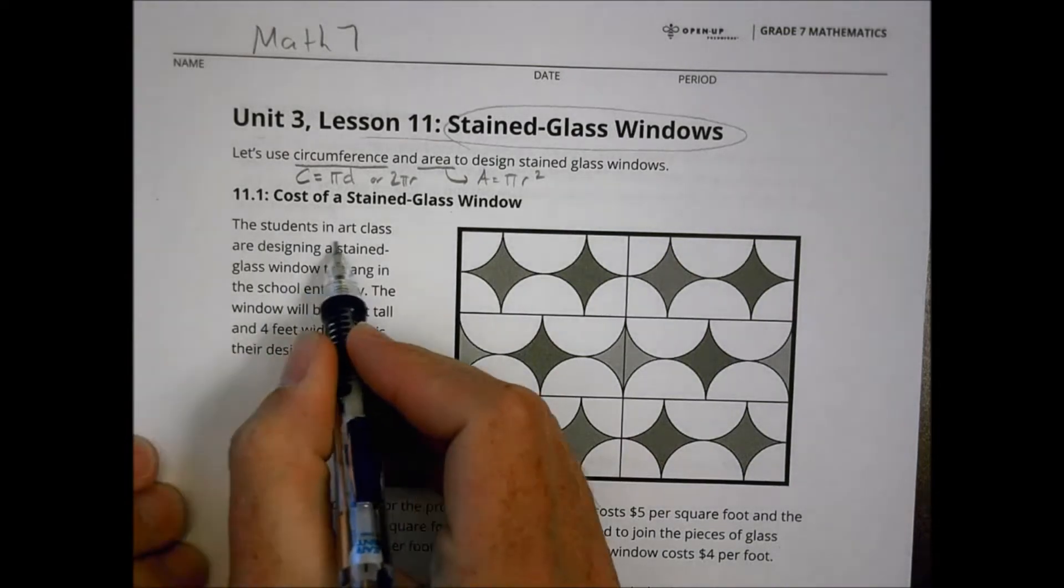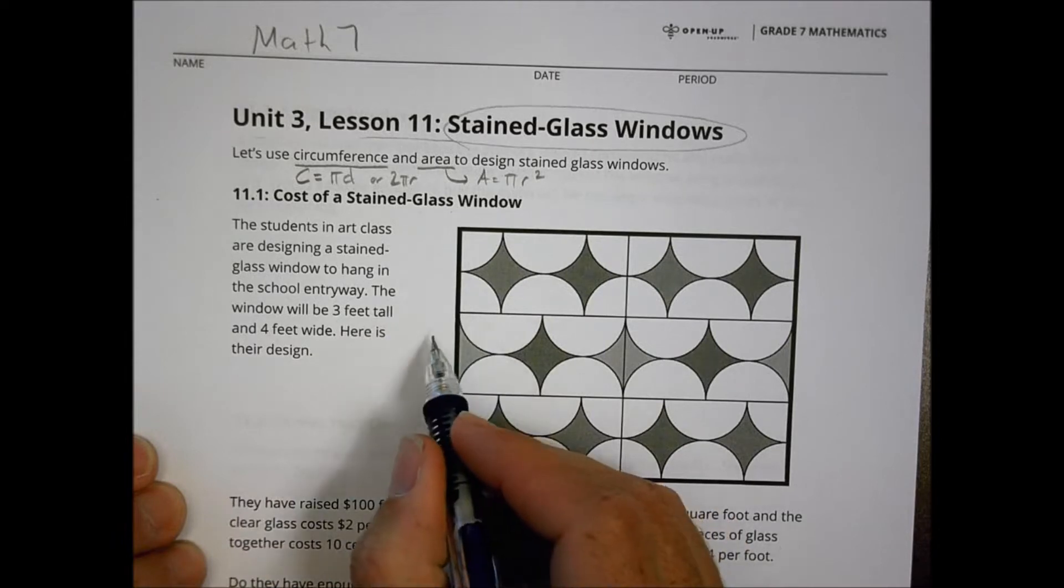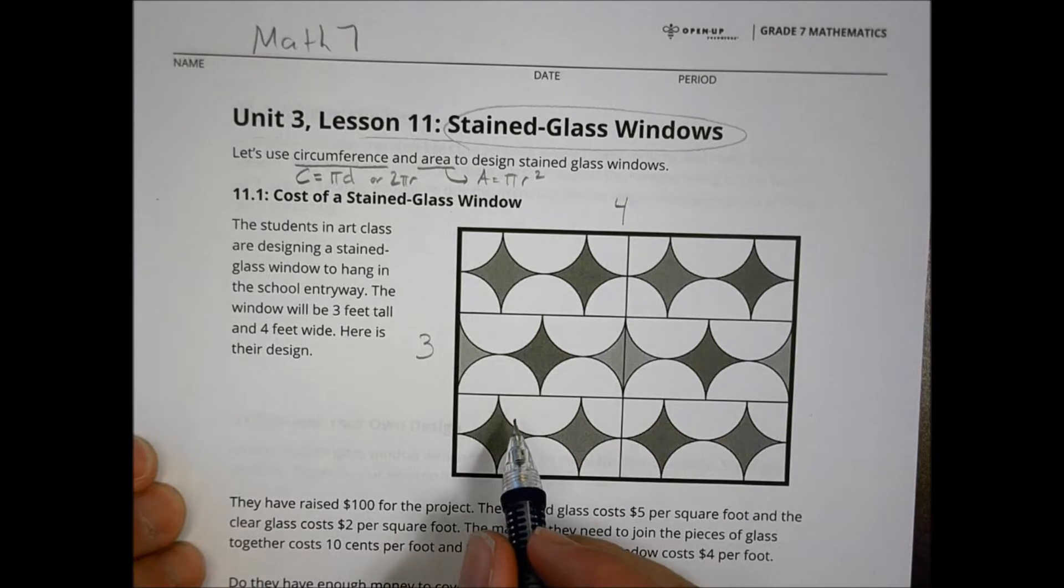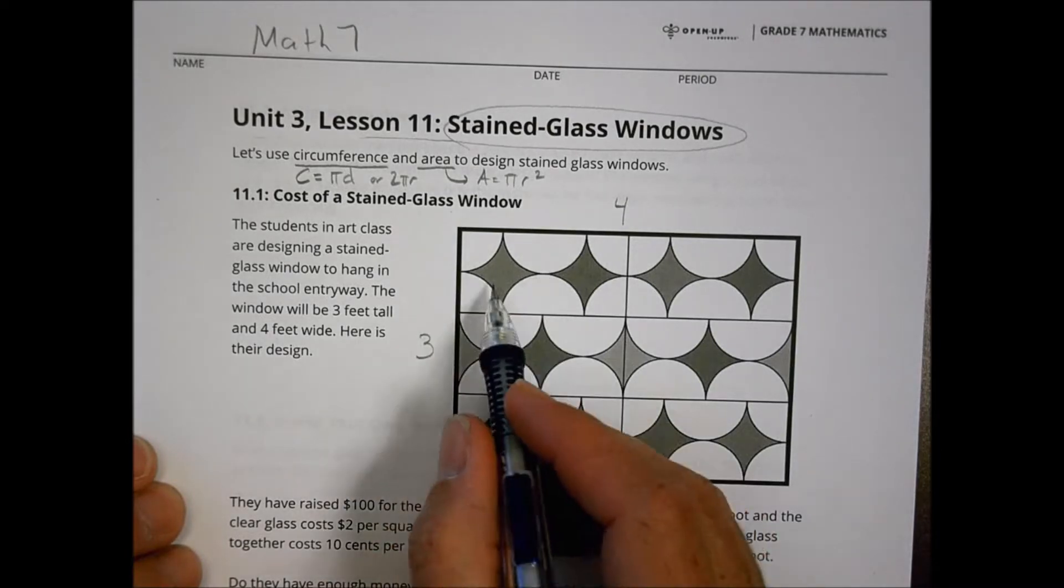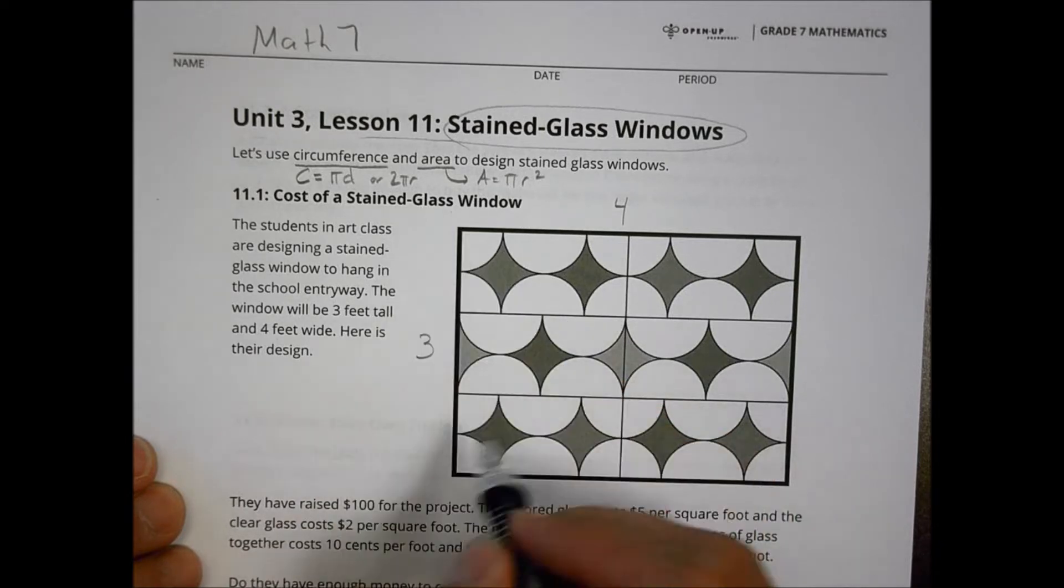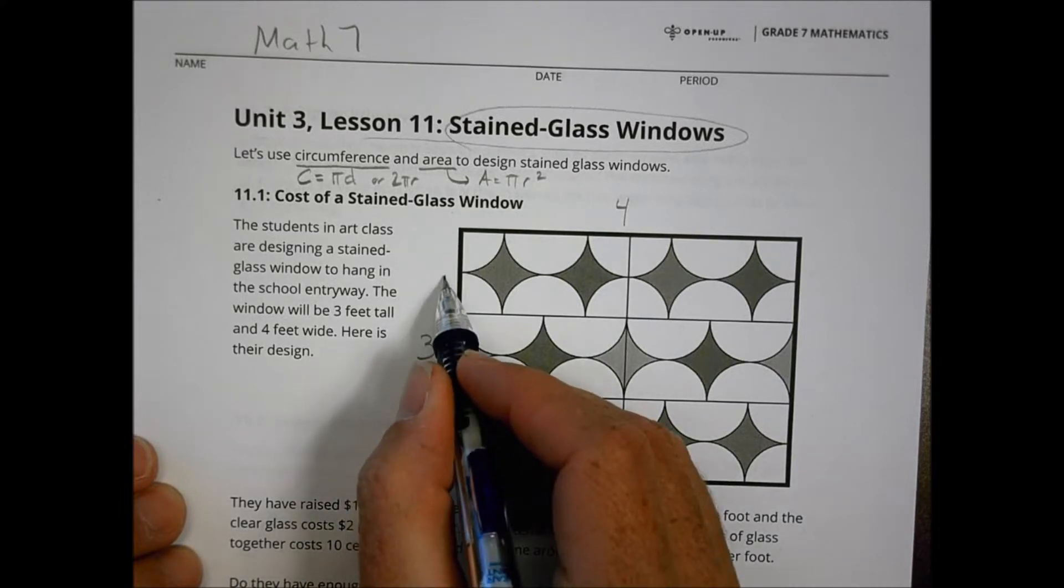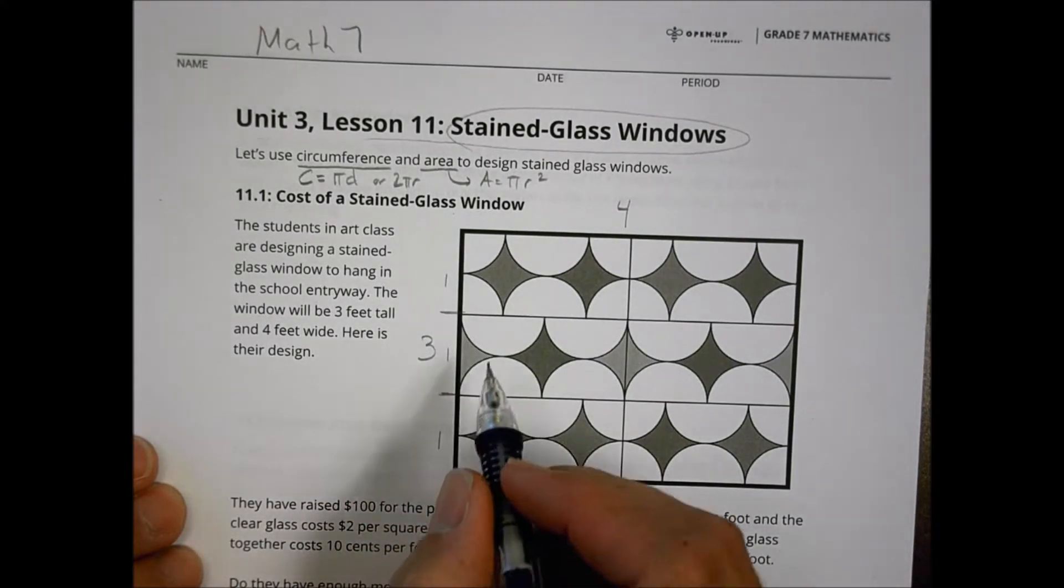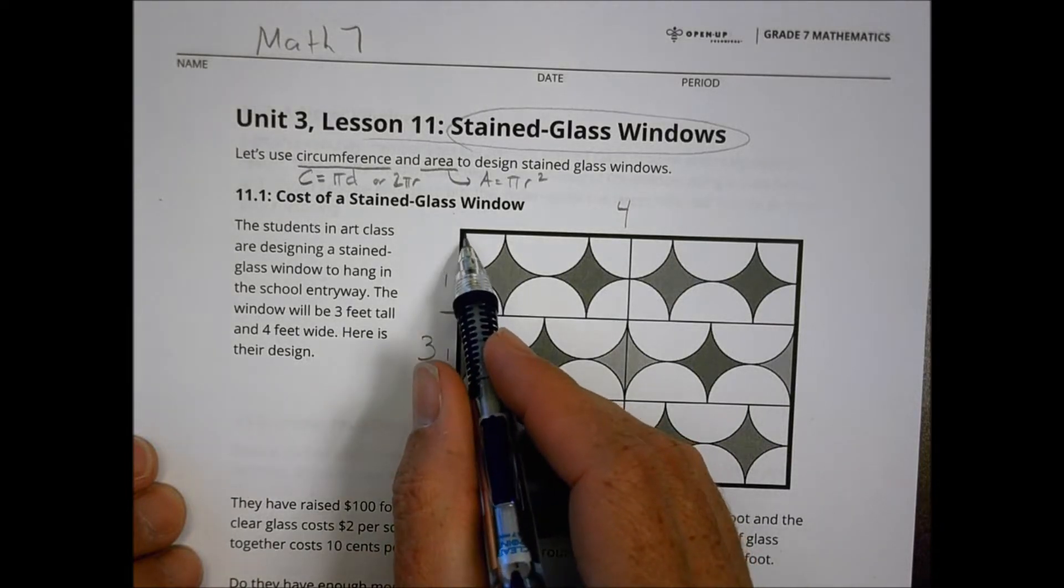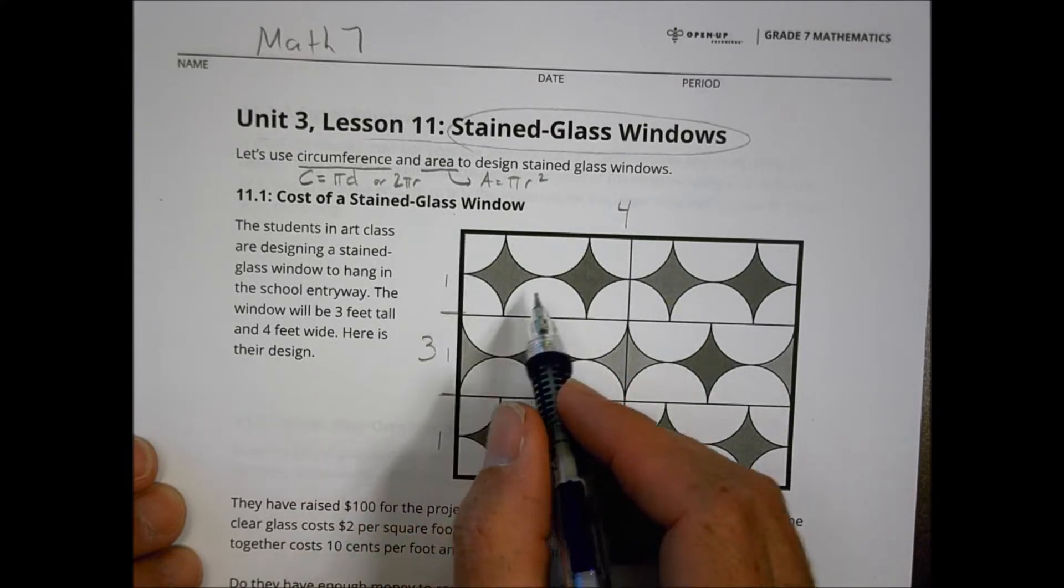All right, so it says the students in art class are designing a stained glass window to hang in the school entryway. The window will be 3 feet tall and 4 feet wide. Here is their design. All right, so here's what we know. It's 3 feet tall and 4 feet wide, which would mean for us a couple things before I move forward. It means that each one of these spaces right here is going to be one, or one foot there. When I look at the shapes here, I have part of a circle, and so that means that that portion plus that portion, which would be a diameter of a half a circle, looks like about one.